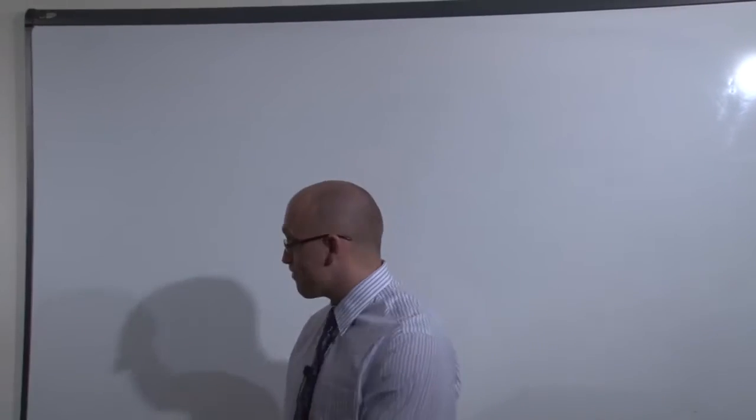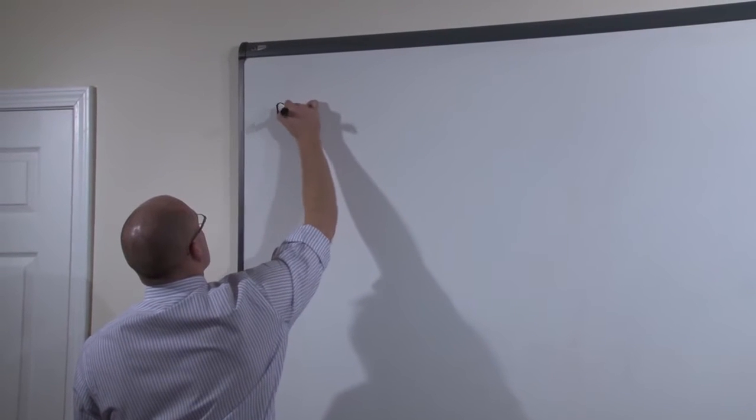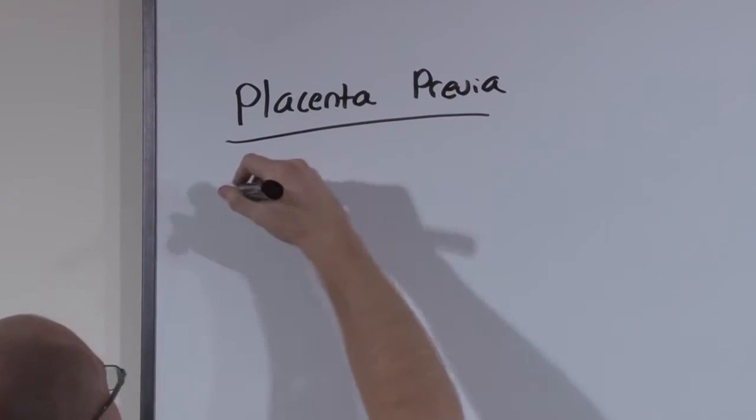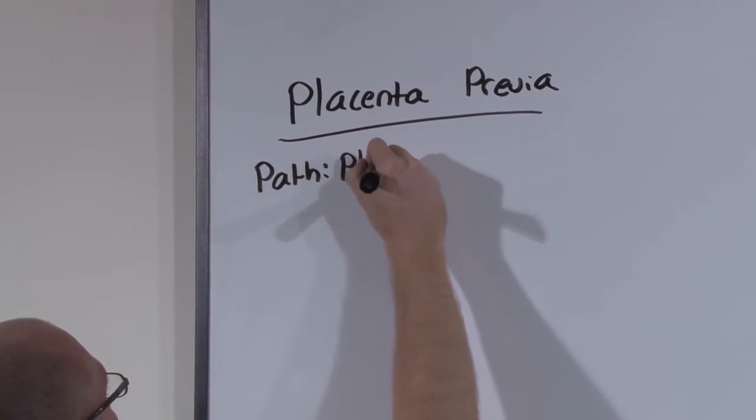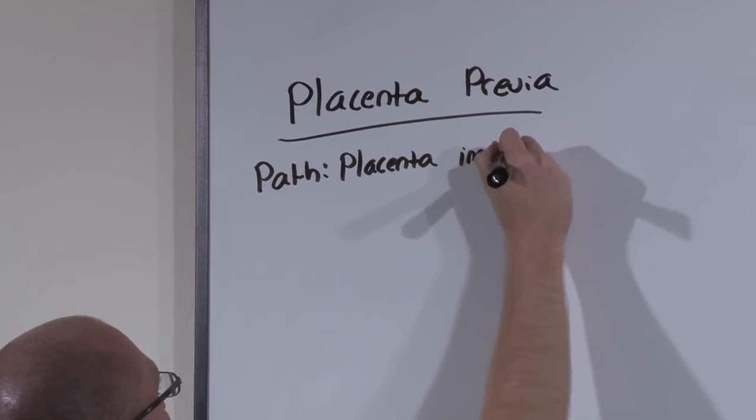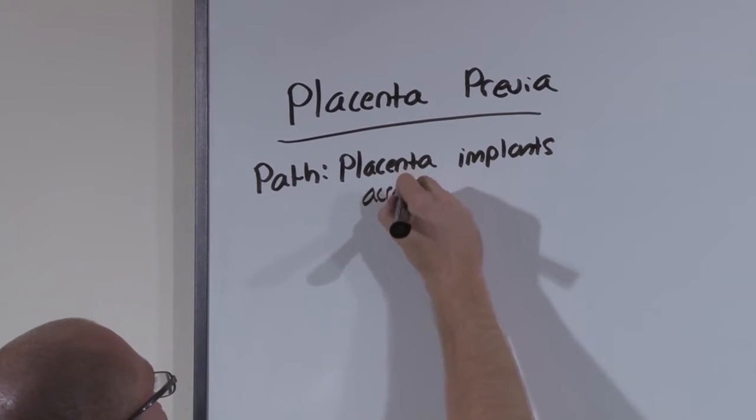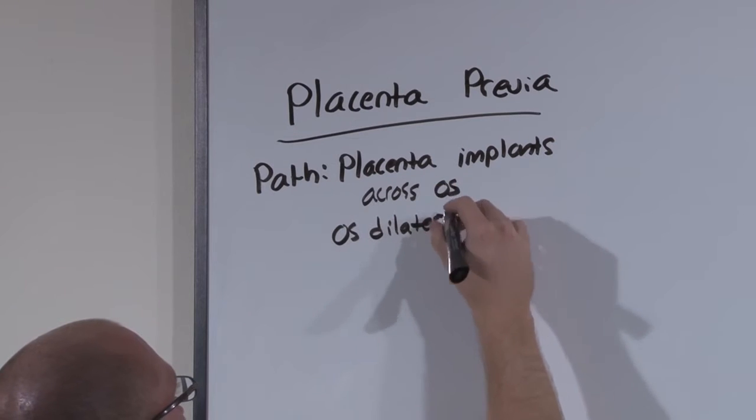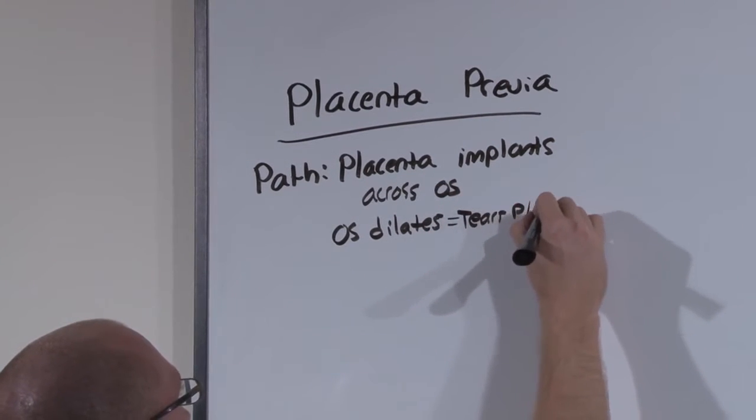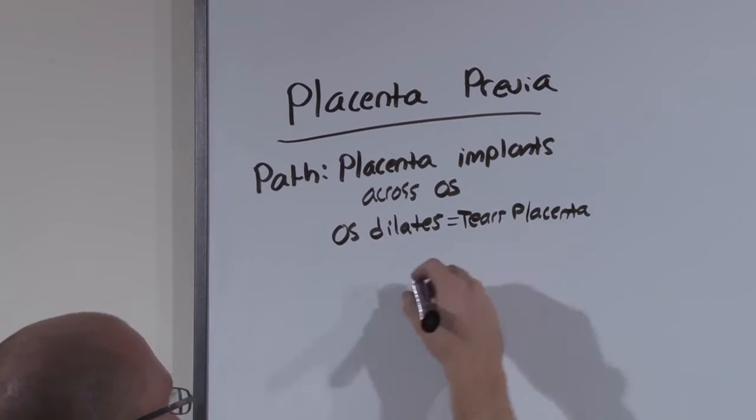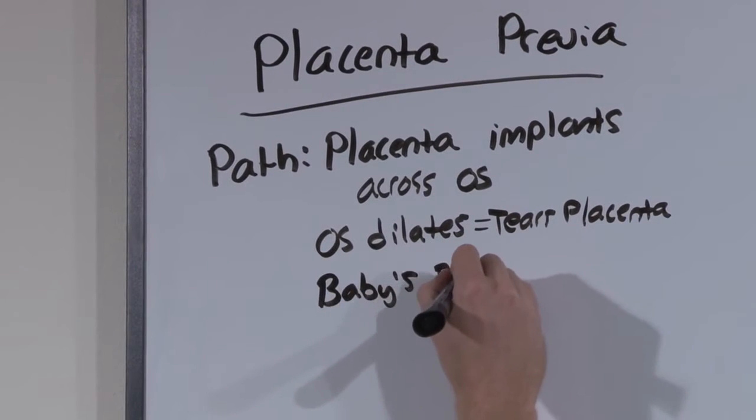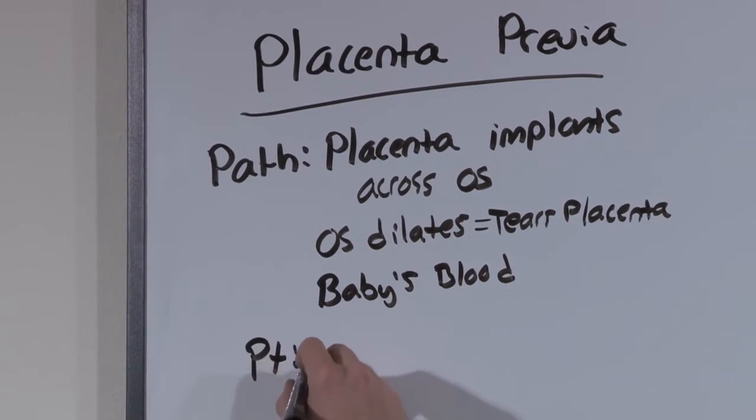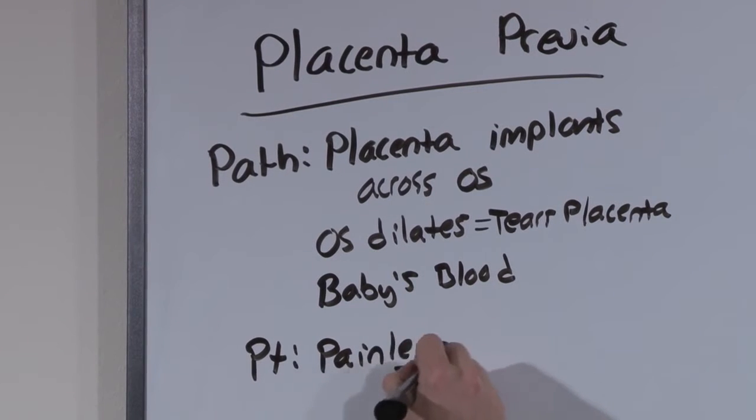Starting with placenta previa. Previa means across the os. So in this disease, the placenta implants across the os. And as the os dilates, it stretches a very non-distensible placenta and tears the placenta. And so the blood that's coming out of mom is actually blood from the placenta, which means it's baby's blood. Baby's parts are tearing, baby's blood is bleeding, which means that mom won't even notice. This is a painless bleed of the third trimester.